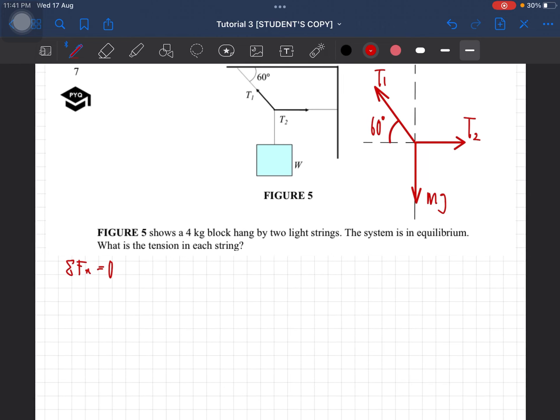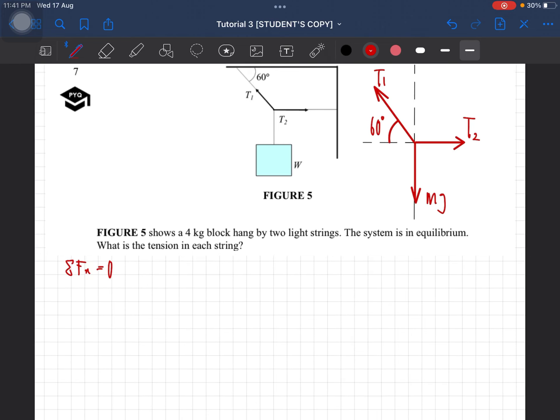Now first, let's look at the x component. So we have T2 and T1 which is in the x component. So for T2, it is going to the right, so it is positive. T1, on the other hand, is pointing to the left.